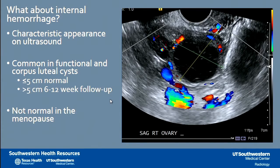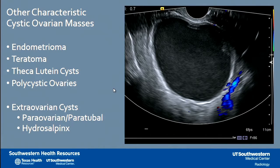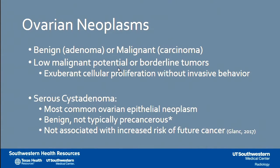When a cyst shows internal hemorrhage, it has a characteristic sonographic appearance — this is a hemorrhagic cyst, and we have slightly different follow-up recommendations for it. It is never normal in menopause, however, and that should prompt referral. There are other characteristic cystic ovarian masses with a very prototypical appearance on ultrasound that should be easily differentiated.